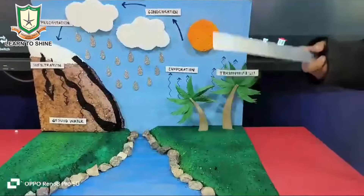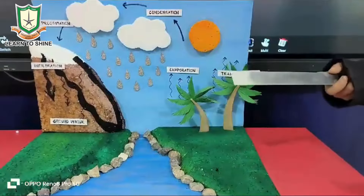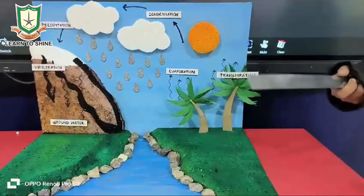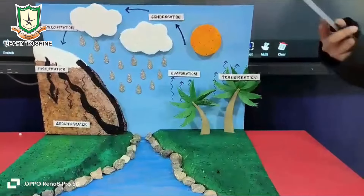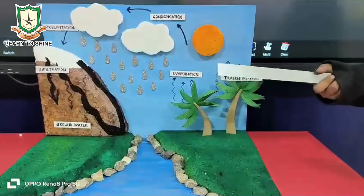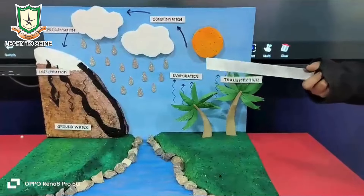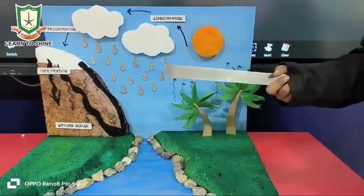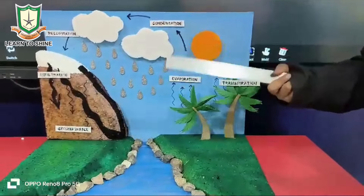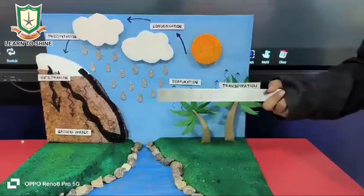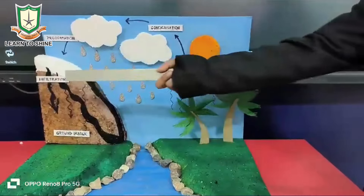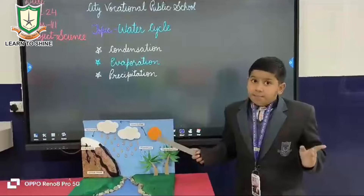And it again reaches into the water bodies and into the soil. When water on the ground surface enters into the soil, this process is called infiltration. Thank you.